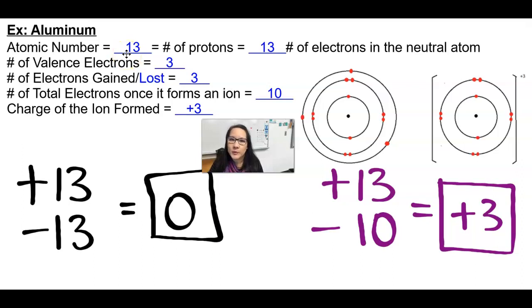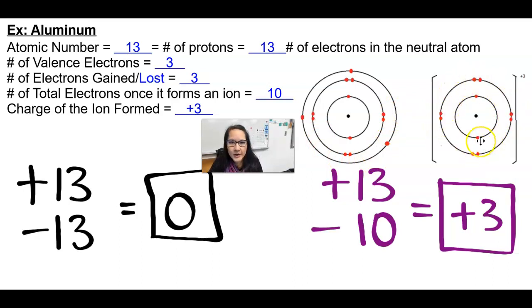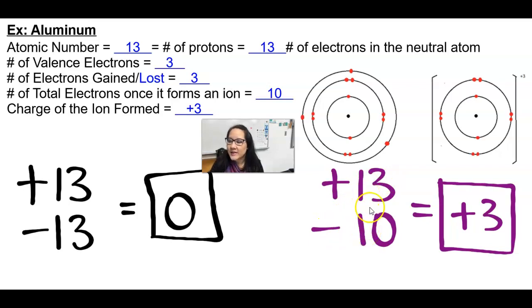Another example would be aluminum, which has an atomic number of 13, so it has 13 protons and 13 electrons in its neutral state. Looking at the Bohr model, losing one, two, three electrons would get rid of that outer energy level, revealing the one underneath that is full with eight electrons. The loss of three electrons gives us 13 protons and 10 electrons, giving us a cation with a plus three charge.